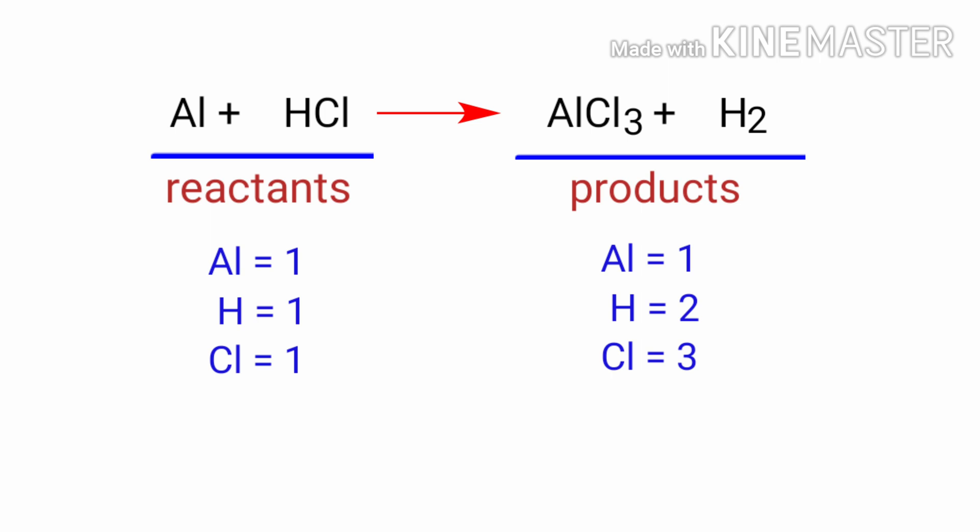In this equation, we need to balance the Chlorine atoms first. To do this, we need to put a coefficient of three in front of HCl.